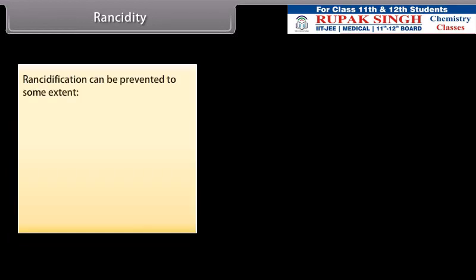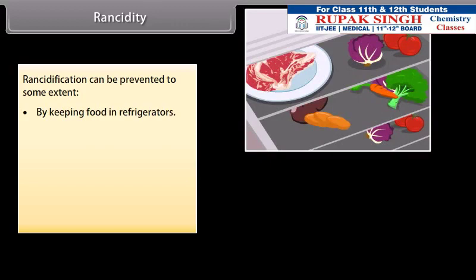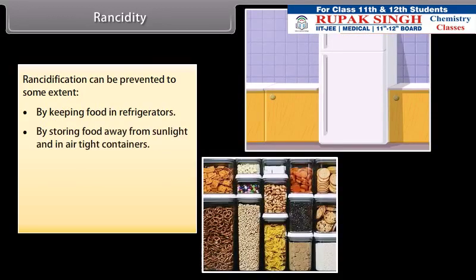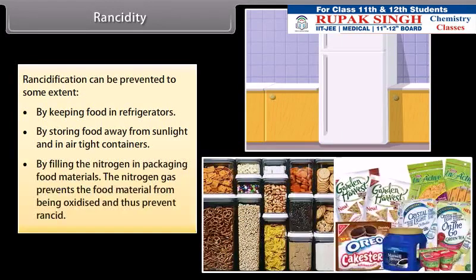Rancidification can be prevented to some extent by keeping food in refrigerators, by storing food away from sunlight and in airtight containers, and by filling the nitrogen in packaging food materials. The nitrogen gas prevents the food material from being oxidized and thus prevents rancidity.